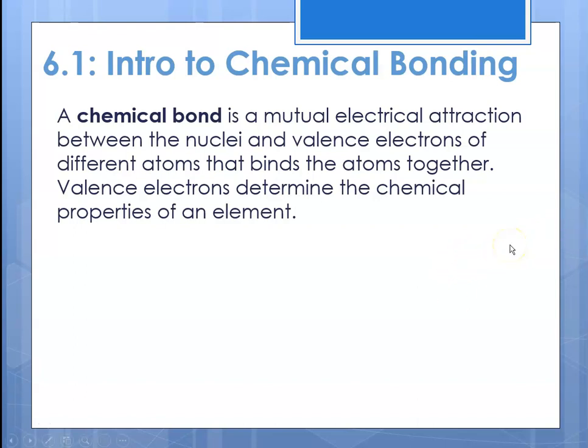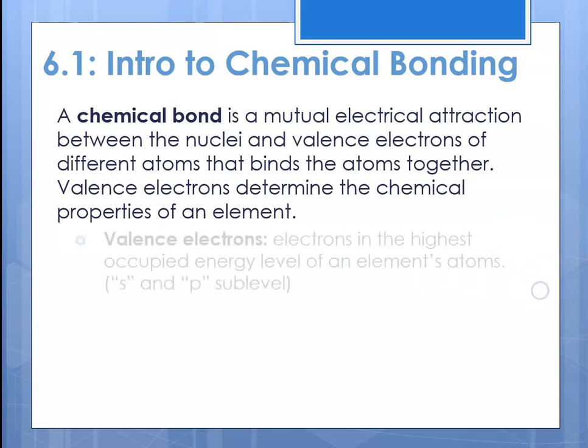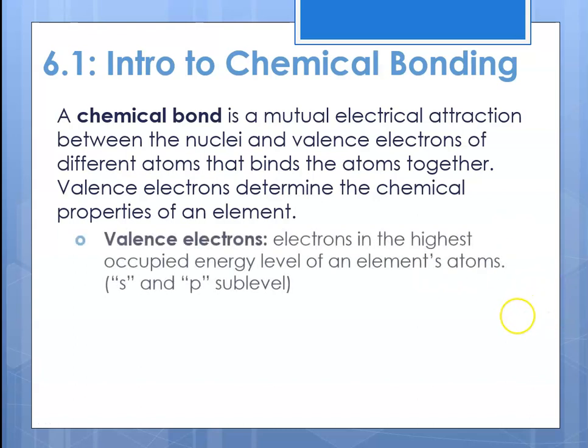That's why we spent some time learning about electron configurations — because the outermost electrons determine what's going to happen when two atoms encounter each other. Valence electrons are the electrons in the highest occupied energy level of an atom's elements. By valence electrons, we are referring specifically to the S and P sublevel.